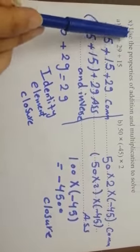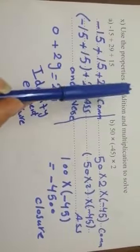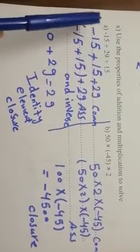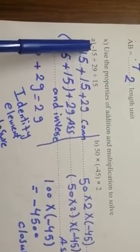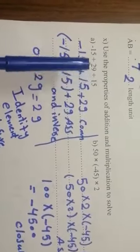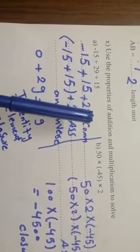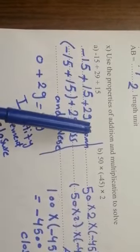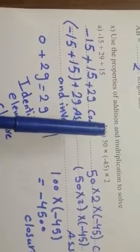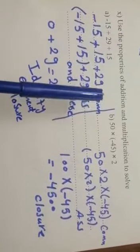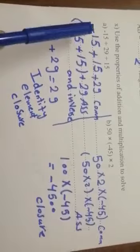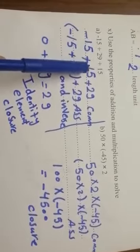Use the properties of addition and multiplication to solve. Letter A: negative 15 plus 29 plus 15. The properties of addition are: commutative, associative, inverse, identity, identity element, and closure.